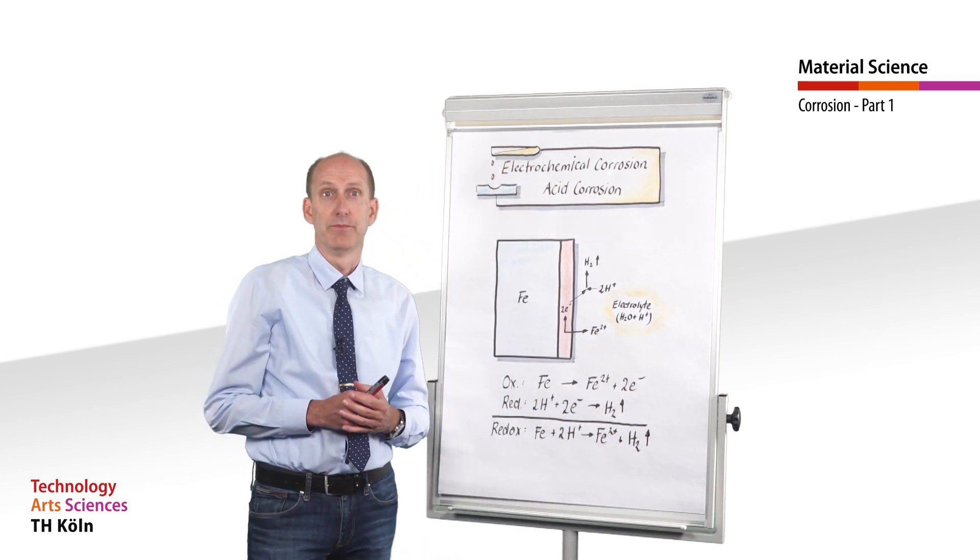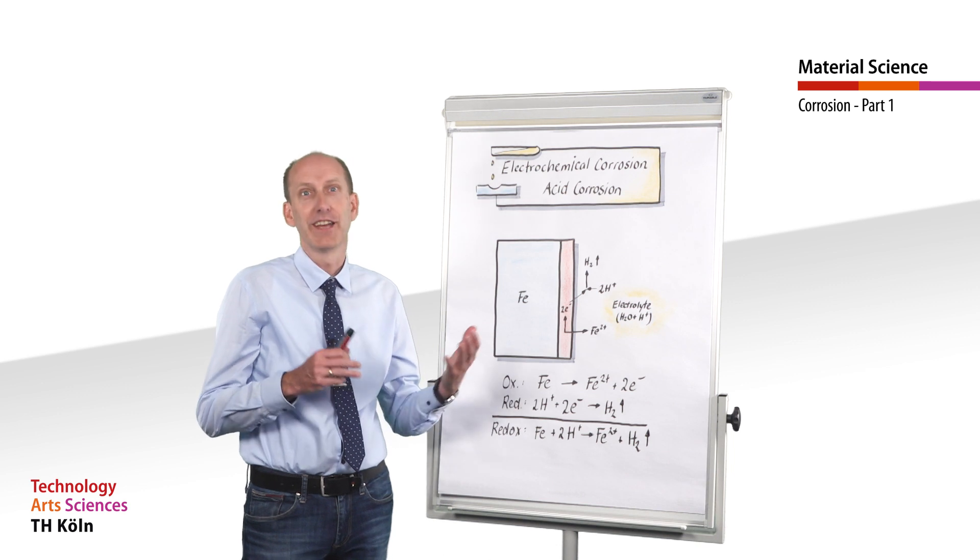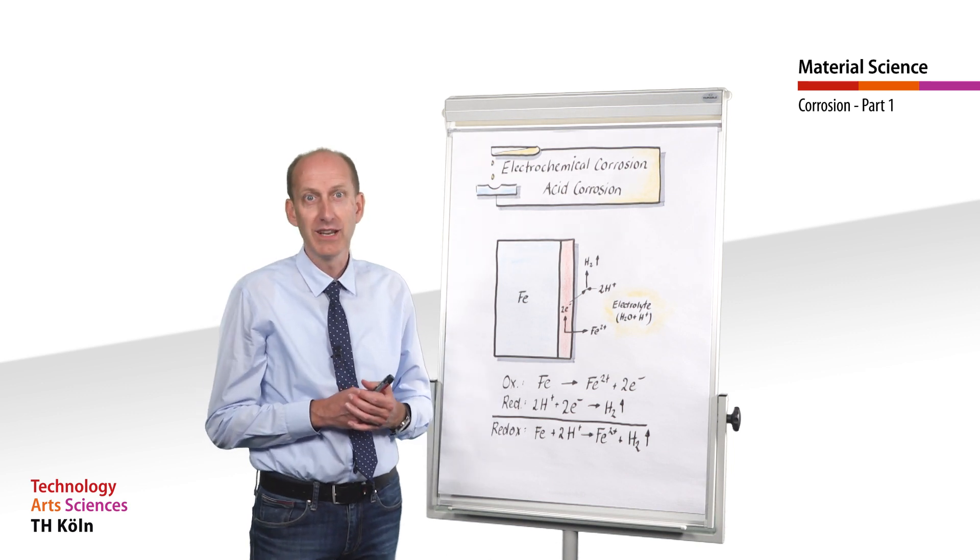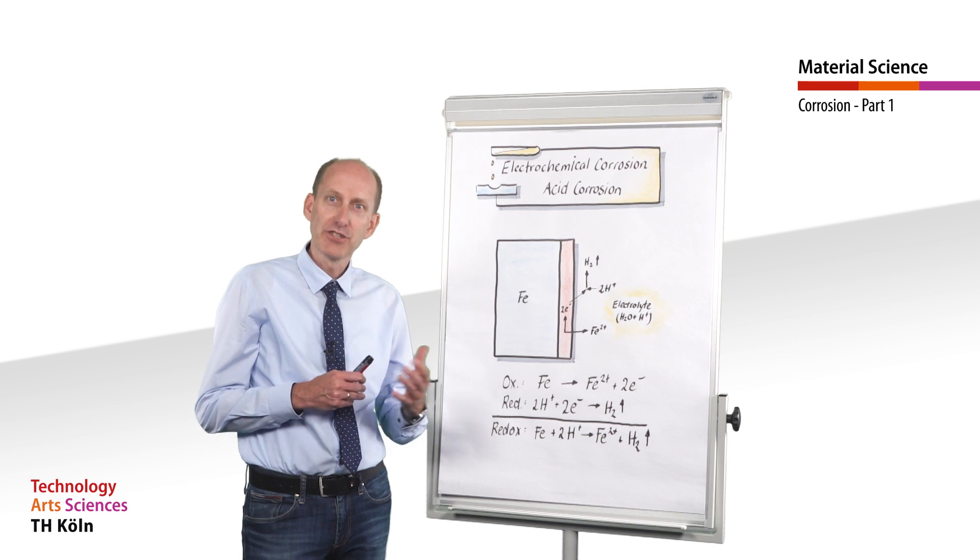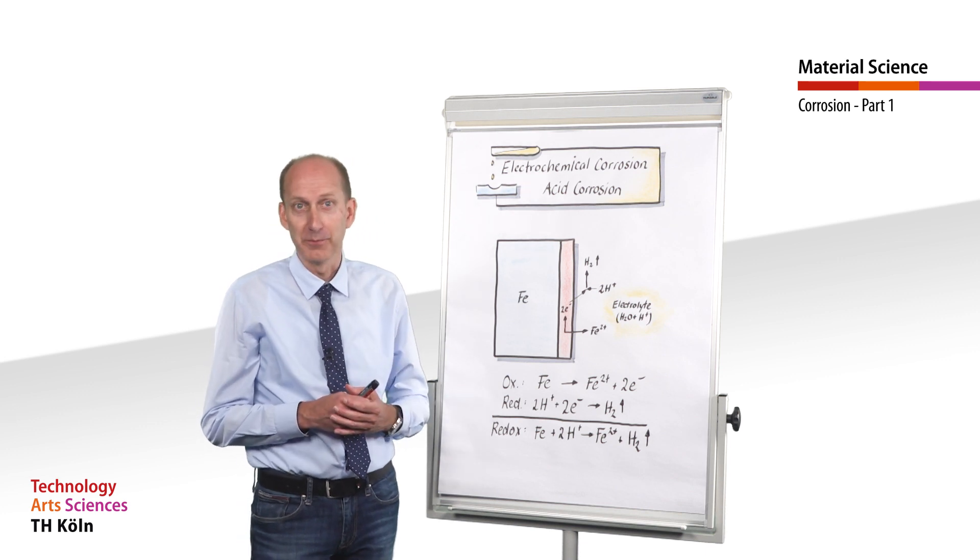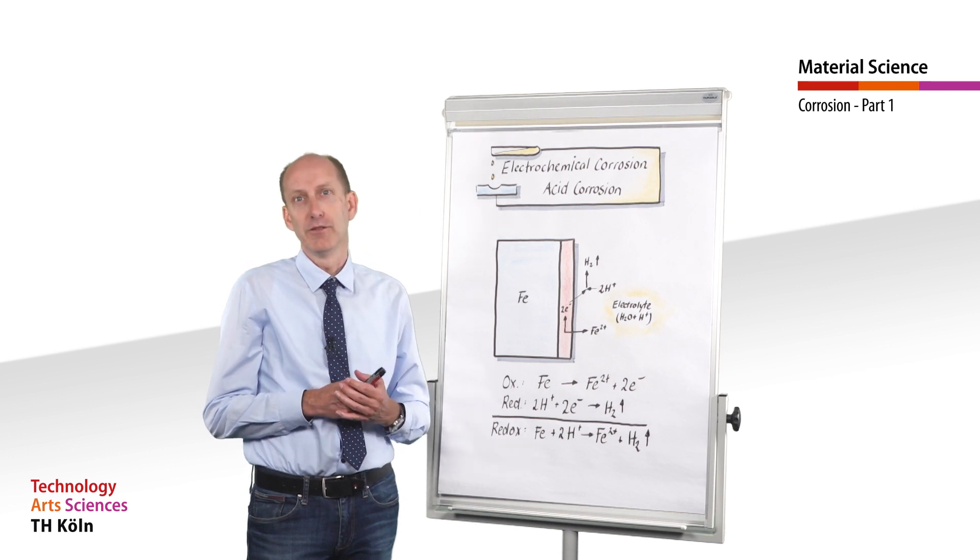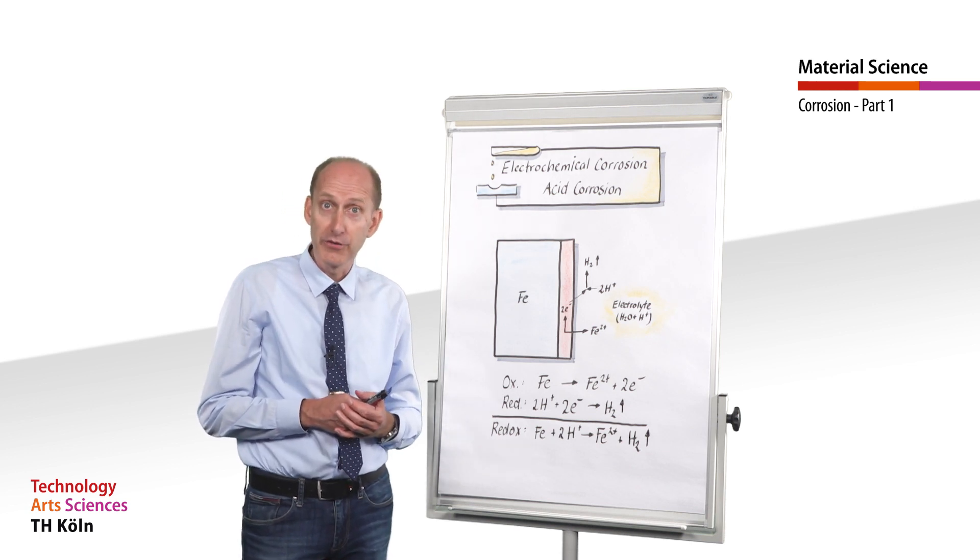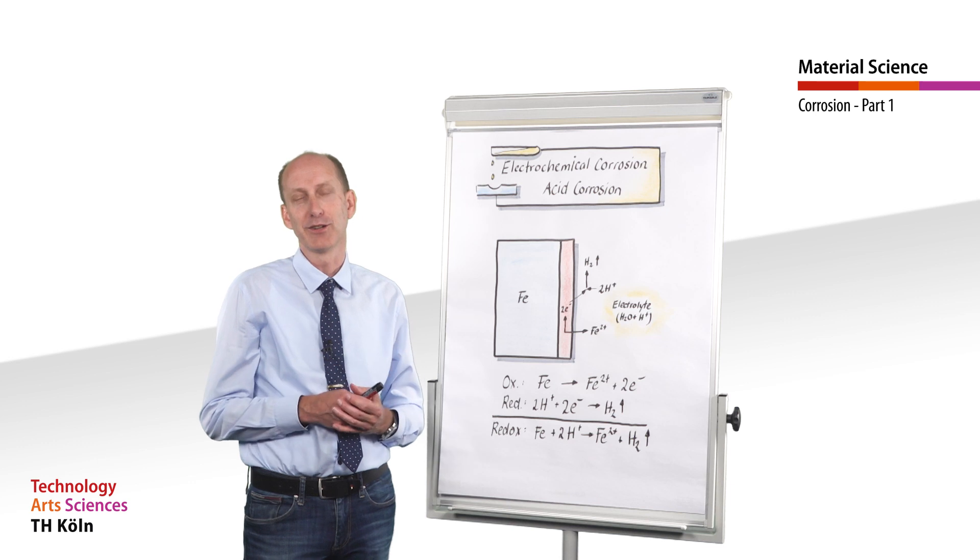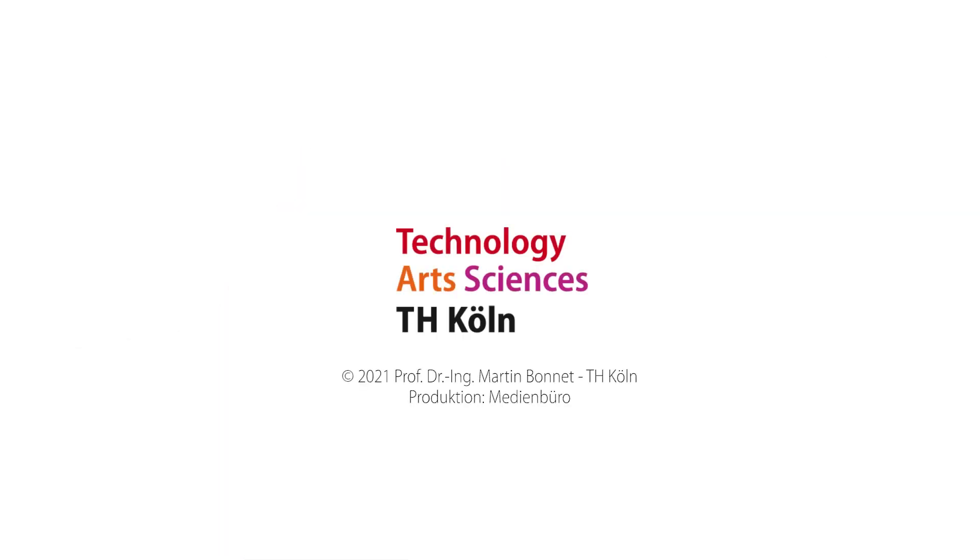As we can imagine, acid corrosion can also quickly lead to additional hydrogen embrittlement. So much so far on the subject of corrosion. Thank you for watching. But join me again for the next video when we will learn more about the various types of electrochemical corrosion.